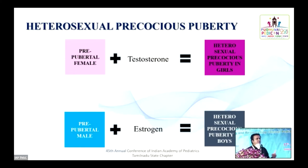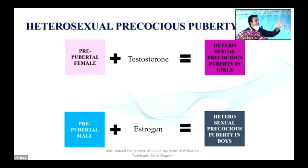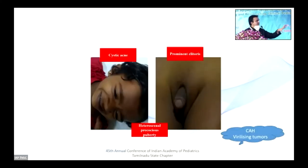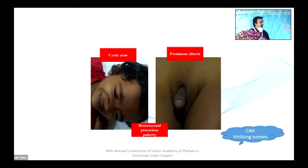Whenever there is a crosstalk of hormones — a girl exposed to early testosterone — you're looking at heterosexual precocious puberty. Whenever you have a girl with clitoral prominence or cystic acne, you're thinking in terms of heterosexual precocious puberty. The clue from simple observation is: does this child have CAH? Does this child have a virilizing ovarian tumor? These are the pivotal clues.